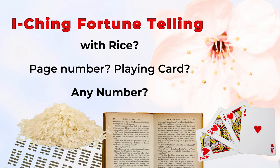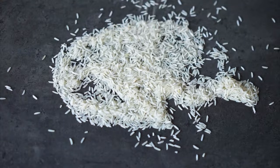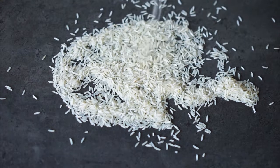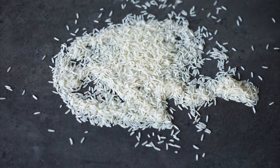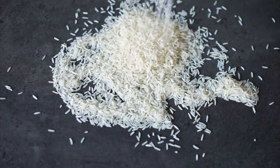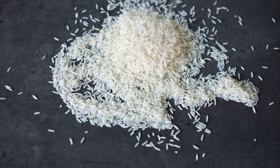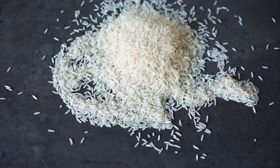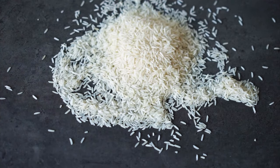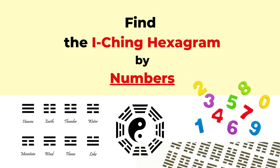I used to visit some fortune telling places that use rice to predict the future. That always made me curious — how can you tell the future just by simple rice grains? After studying Yi Jing divination, it's not a mystery anymore, because it's all related to numbers.